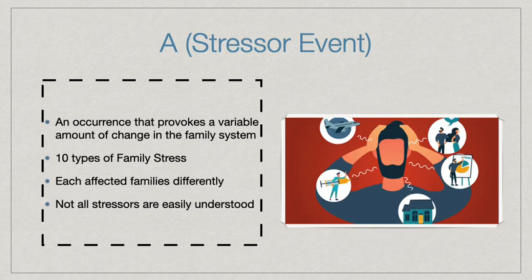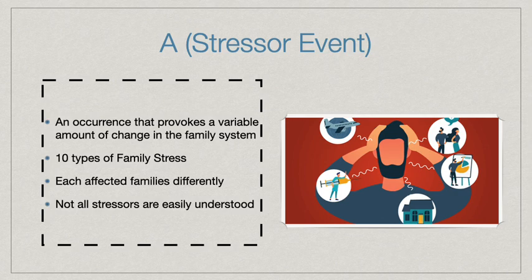Let's start with A, which is the stressor event. The stressor event is any occurrence that provokes a variable amount of change in the family system. There are 10 types of family stress, but each family is affected differently, and not all stressors are easily understood by the family. For example, this picture shows a male-bodied person experiencing a stressor event, with thoughts ranging from relationship arguments, health, traveling, budgeting, their job, and housing situation.